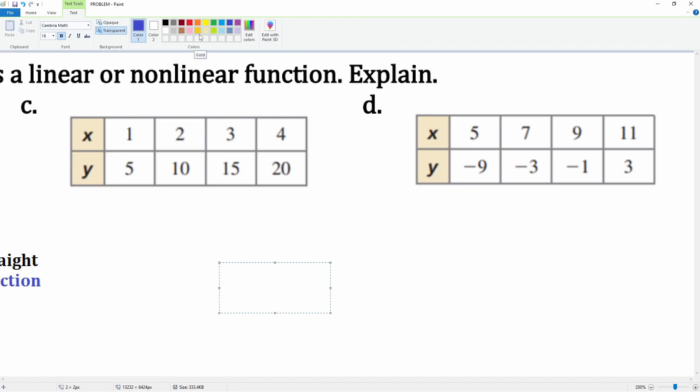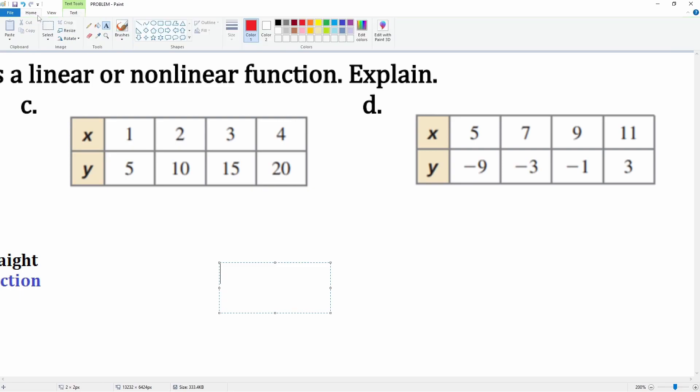Let's see how it changes here. The x values add one each time, and the y values are adding five each time. So here you would say that these values make a linear function.